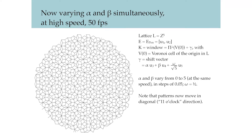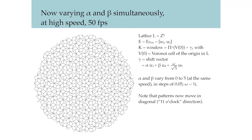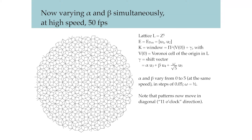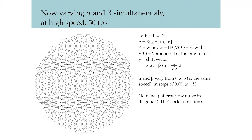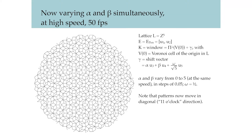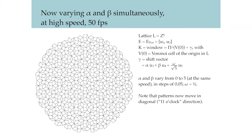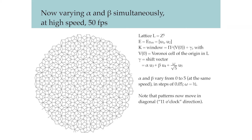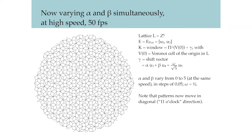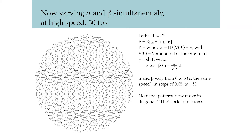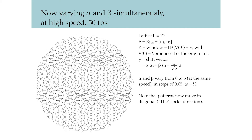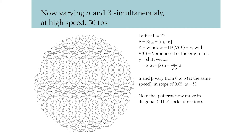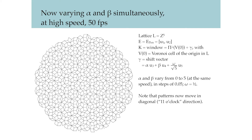In this animation, we keep omega to be one half, and we vary both alpha and beta from zero to five in steps of 0.05, again using a high speed 50 frames per second rate of change. Notice how the patterns now move diagonally.